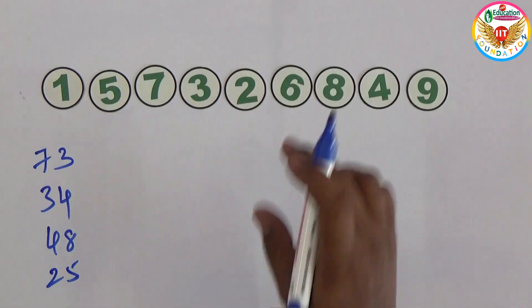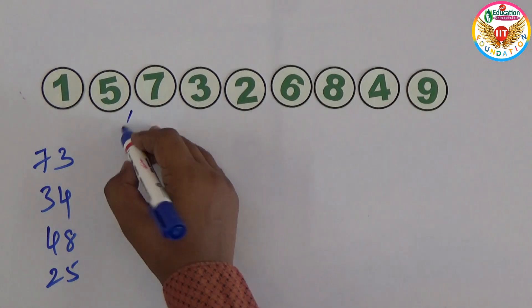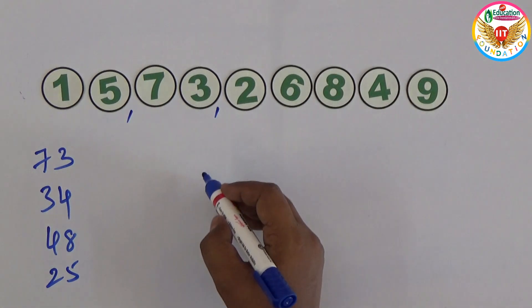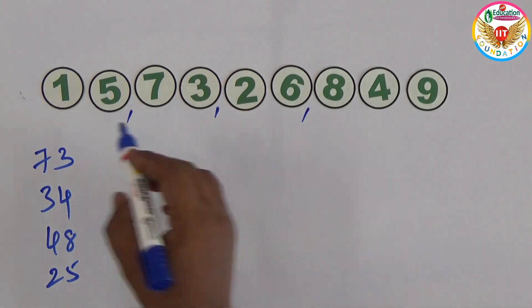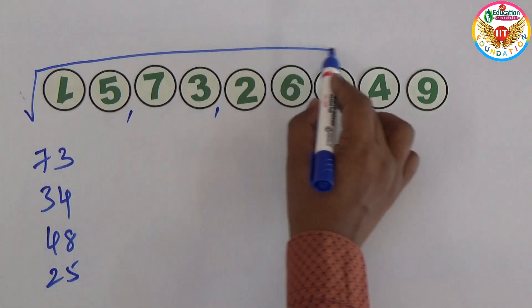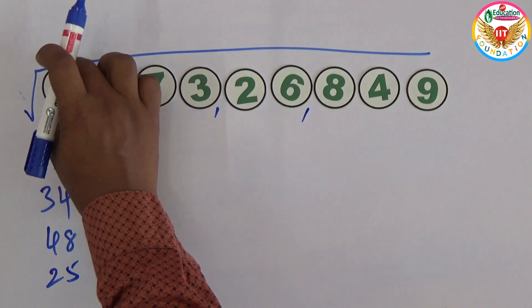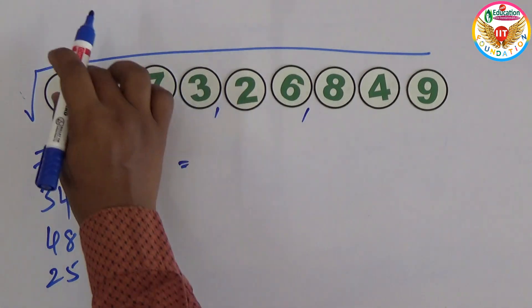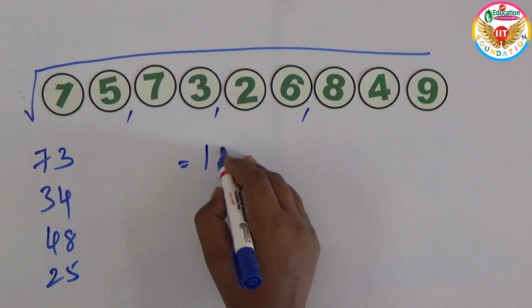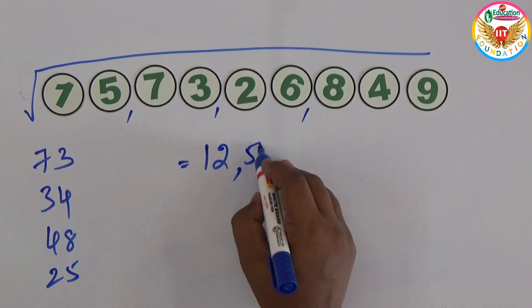Now this is the number, 15 crore 73 lakh 26,849. So the square root of this number, square root of this number you can use the calculator also, that is 12,543.